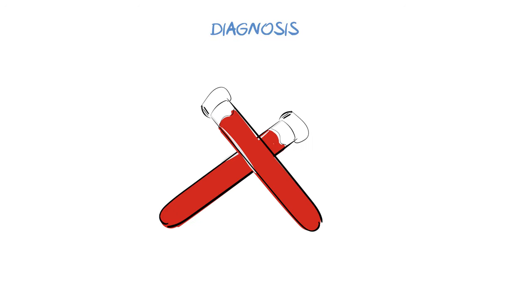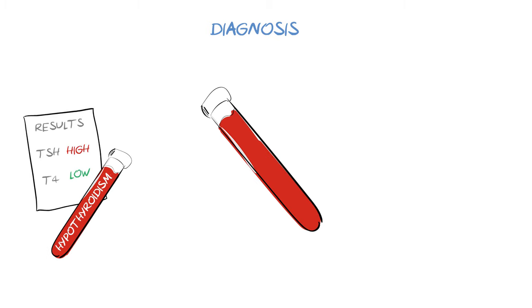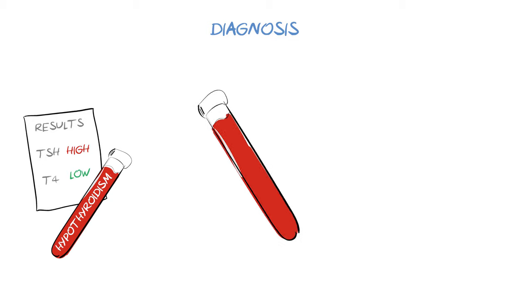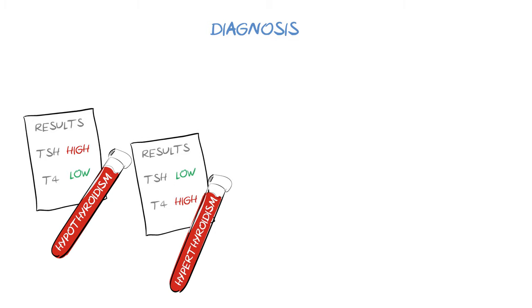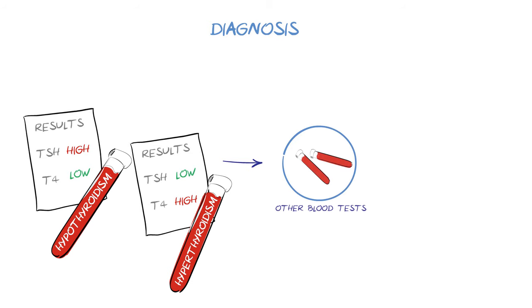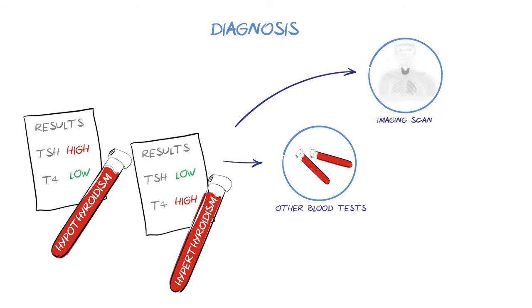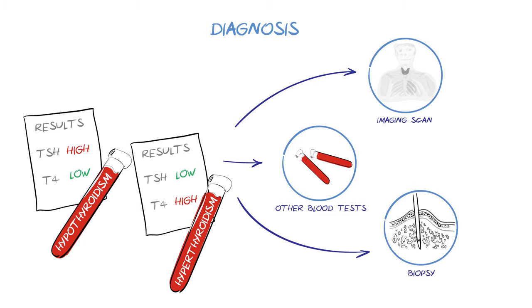Thyroid disorders are diagnosed by checking the levels of thyroid hormones in the blood and sometimes by a physical examination. Usually, in hypothyroidism, TSH will be high and T4 will be low, and in hyperthyroidism, TSH will be low and T4 will be high. Depending on your diagnosis, there may be further investigations, such as follow-up blood tests, and possibly a thyroid scan or biopsy to find out the underlying cause.